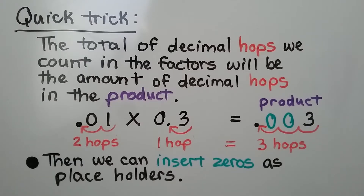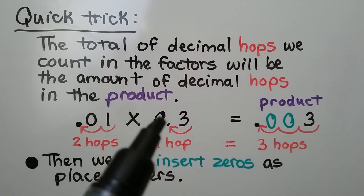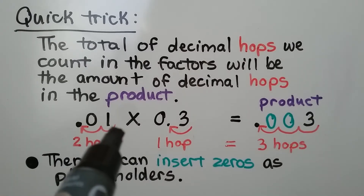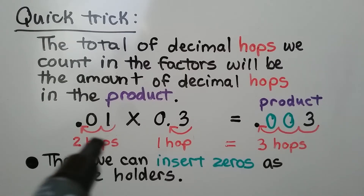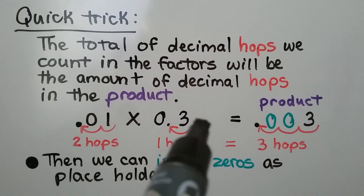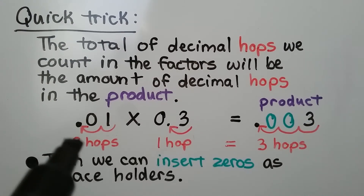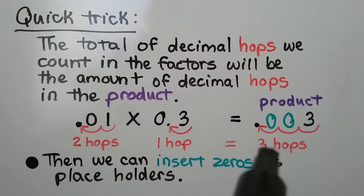Throughout this chapter, I'm going to discuss this quick trick several times: the total of decimal hops we count in the factors will be the amount of decimal hops in the product. If we're multiplying 1 hundredth times 3 tenths, starting from the right side, we count 1, 2 hops to get to the decimal point. For the 3 tenths, there's just 1 hop to get to the decimal point. That's 2 hops and 1 hop — that's 3 hops.